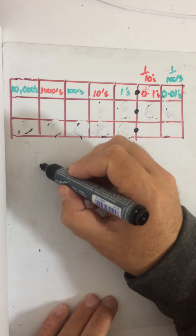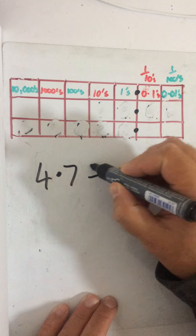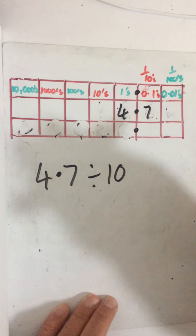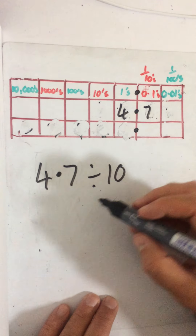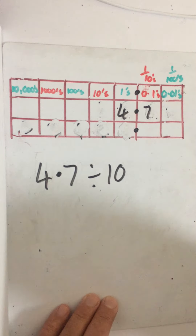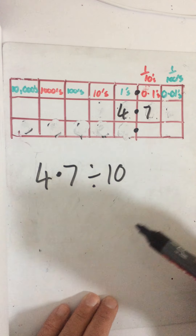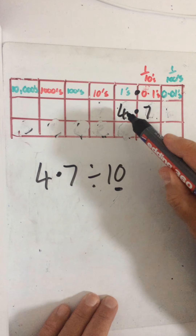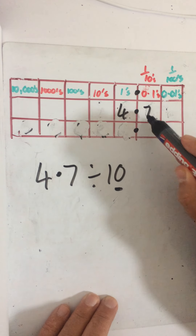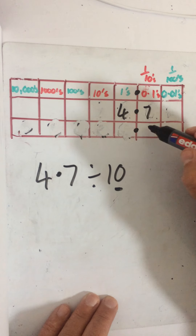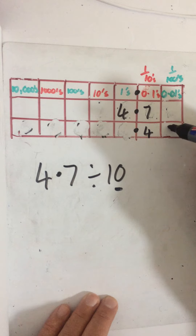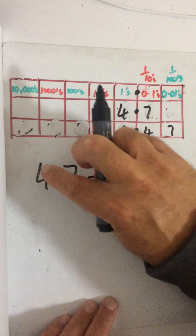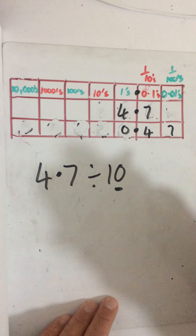So if we're dividing by 10 — say for example this time I've got 4.7 and I'm dividing that by 10. Because I'm dividing, the number is going to get smaller. The same rule applies: one zero means I move them one place, but this time I'm going to move them to the right to make them smaller. So this 4 goes over to here, the 7 goes there, and we put a 0 in front. 0.47.